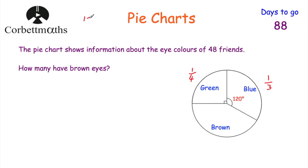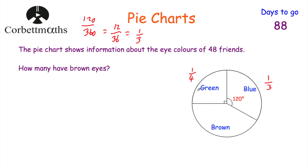If you didn't spot that blue is a third straight away, you could write it as 120 over 360, cancel down by dividing by 10 to get 12 over 36, then divide both by 12 to get one third. So a third of the friends have blue eyes. We know a quarter have green eyes and a third have blue eyes, so the rest must have brown eyes.